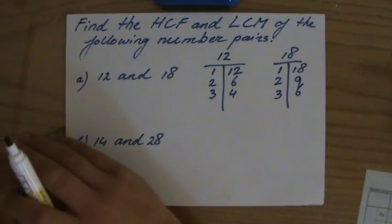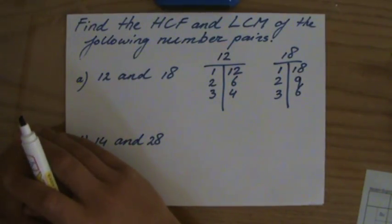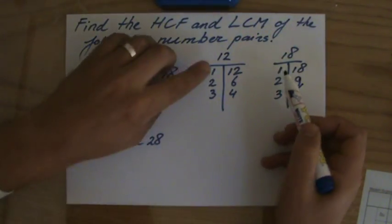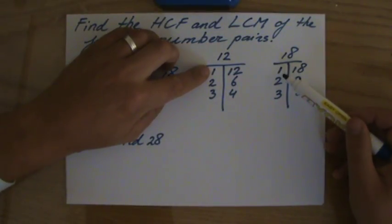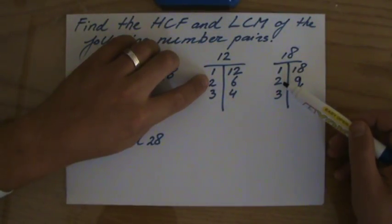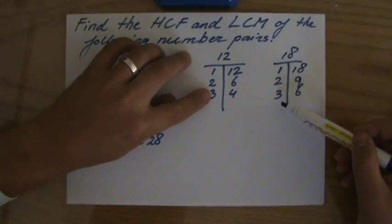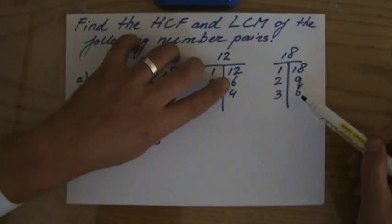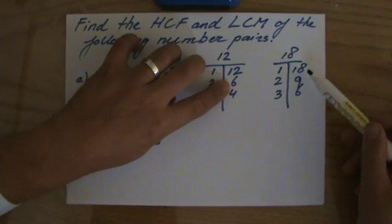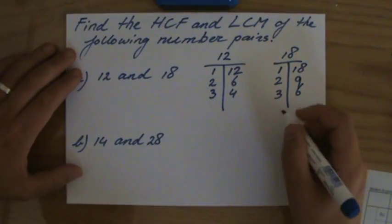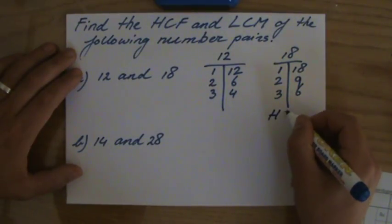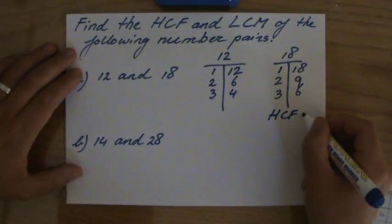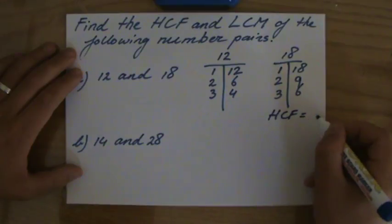Now what is the highest common factor? They both have 2, but is that the highest one? No. They both have 3, but is that the highest? No, because they both even have 6 in common, and that definitely is the highest common factor. So the HCF of 12 and 18 is 6.